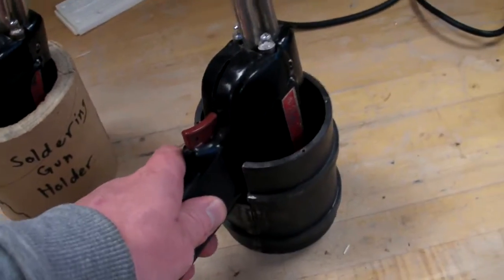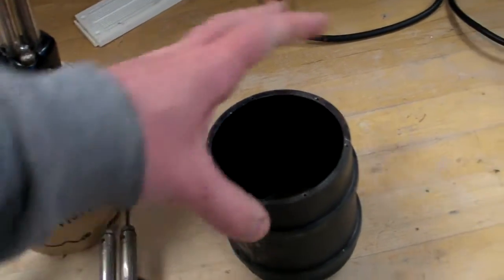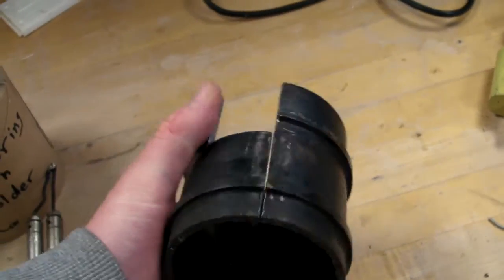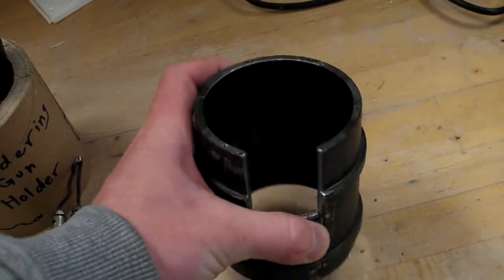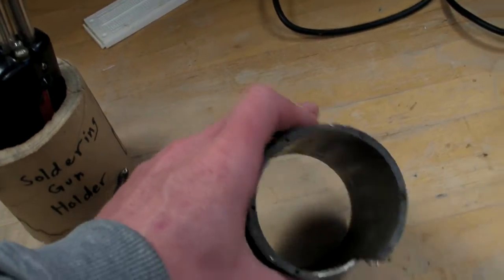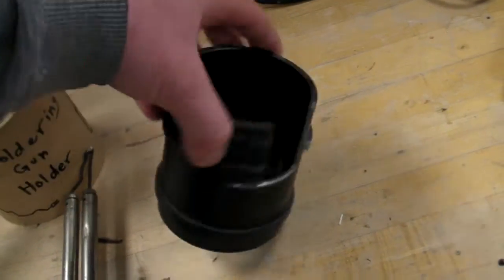This one I didn't actually intend to use as a soldering gun holder, but it worked out nicely. This was the outer steel shell of a synchronous motor.